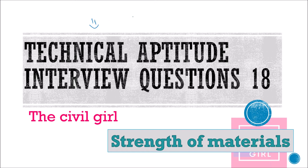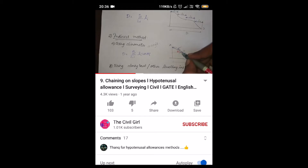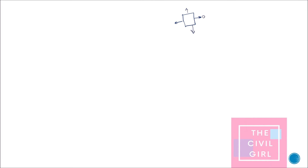Hello everyone, hope you're doing fine. In this video we're going to see about principal stresses and principal strains. Coming to the basics of principal stresses, let me take an object subjected to stresses — sigma x in the x-coordinate and sigma y in the y-axis. For every plane inside the object there will be a normal stress, denoted as sigma n, and a tangential stress, denoted by tau.